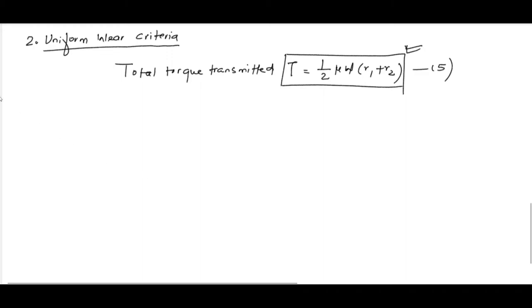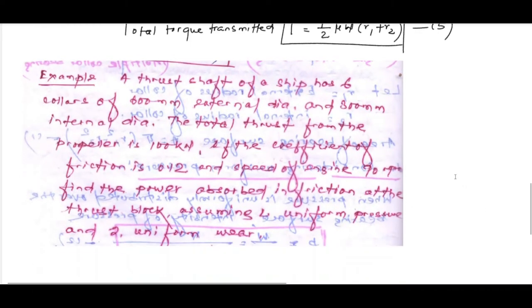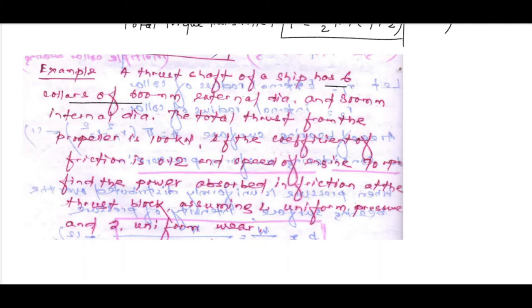Now suppose we have a problem: the thrust shaft of a ship has six collars of 600 mm external diameter and 300 mm internal diameter. The total thrust from the propeller is 100 kilo-Newton. If the coefficient of friction is 0.12 and speed of the engine is 90 rpm, find the power absorbed in friction at the thrust block, assuming first uniform pressure criteria, second uniform wear criteria.